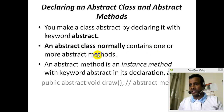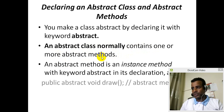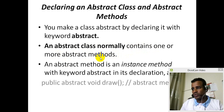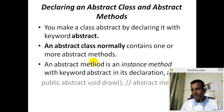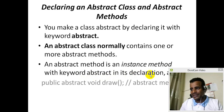The keyword is abstract. The abstract class contains one or more abstract methods. An abstract method is an instance method with the keyword abstract in its declaration.